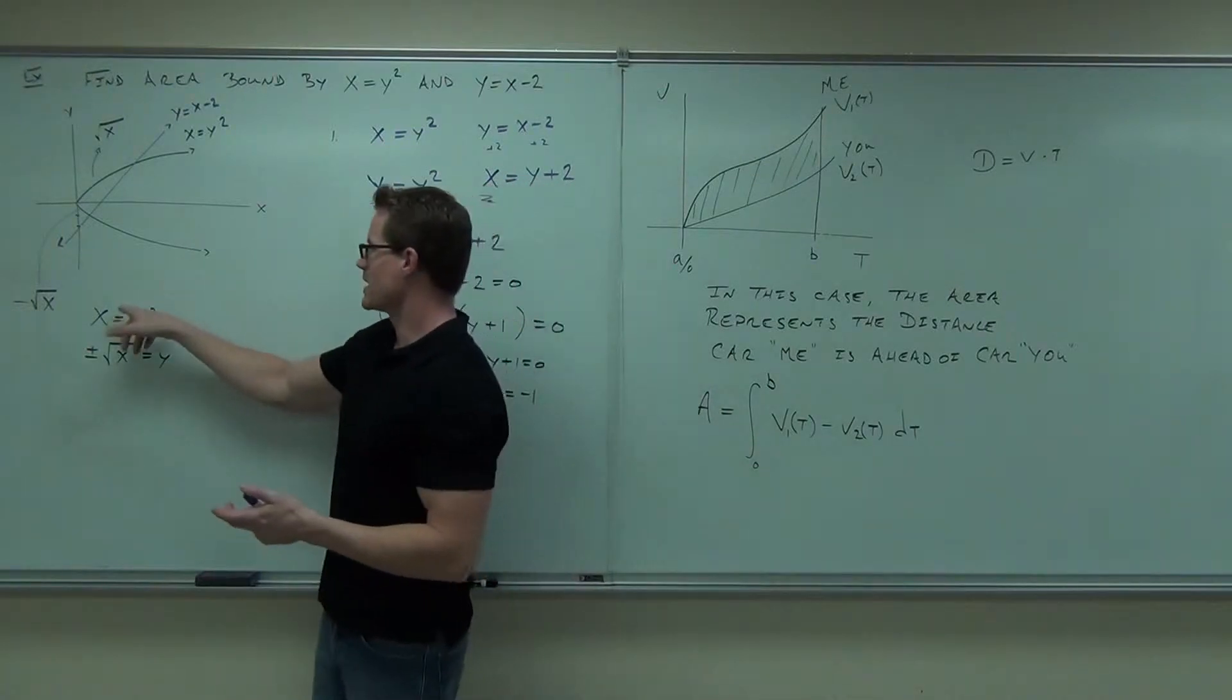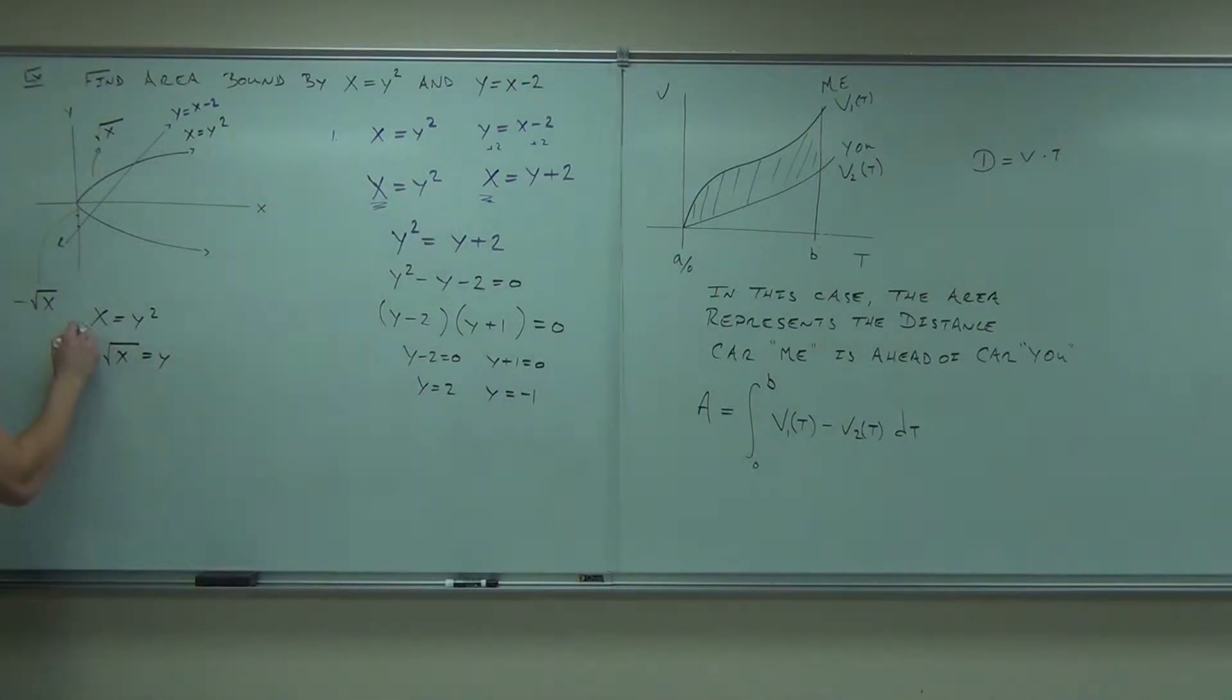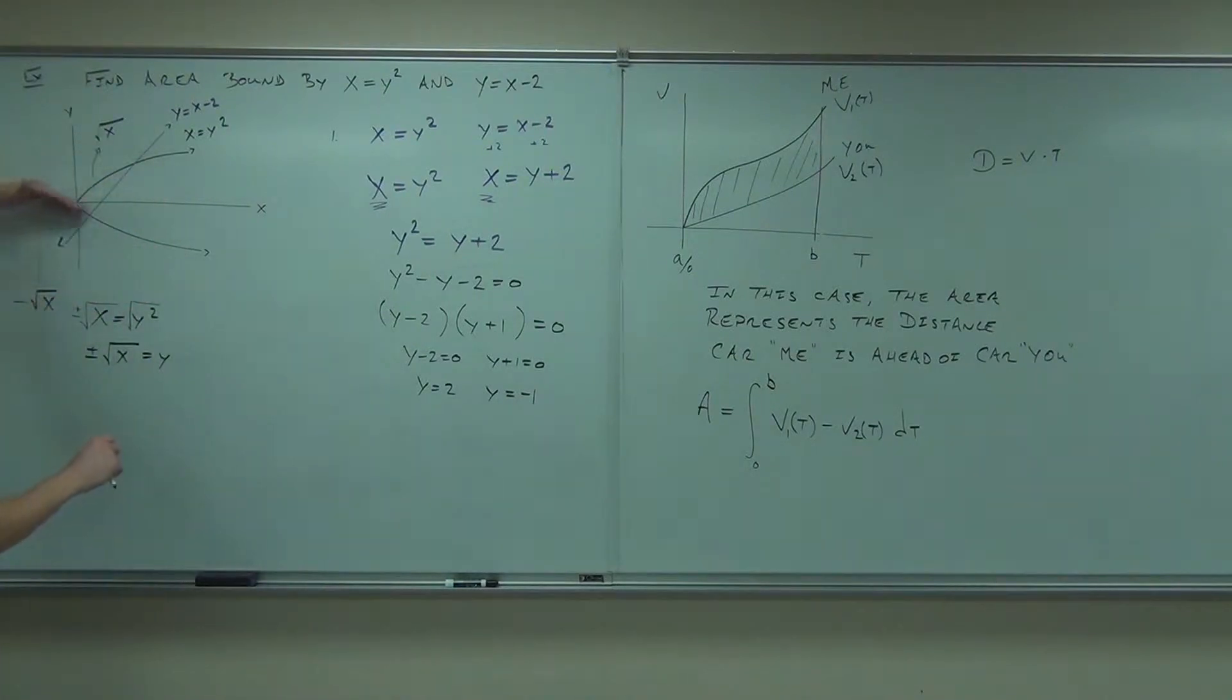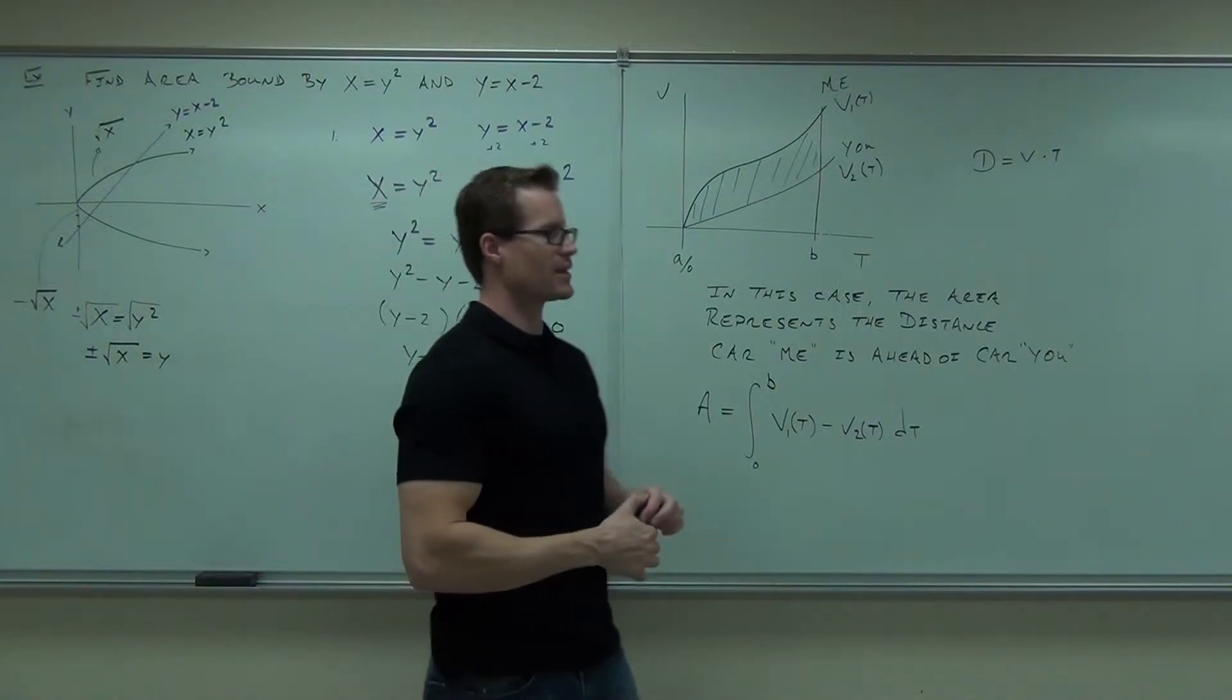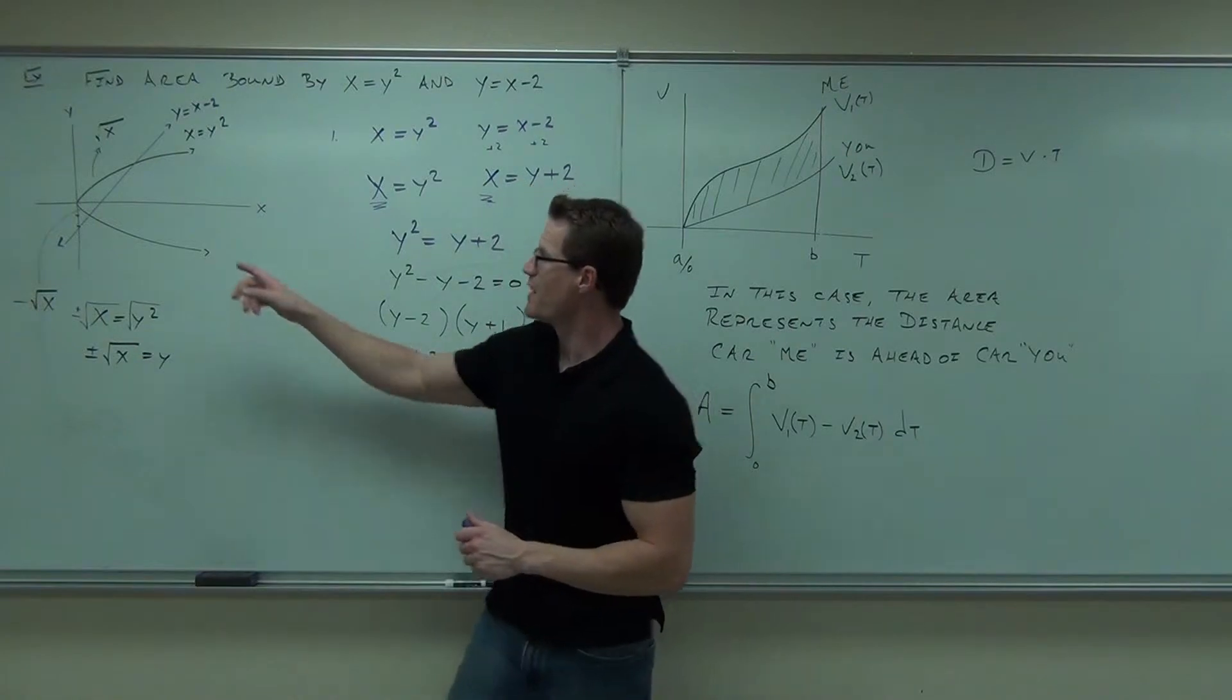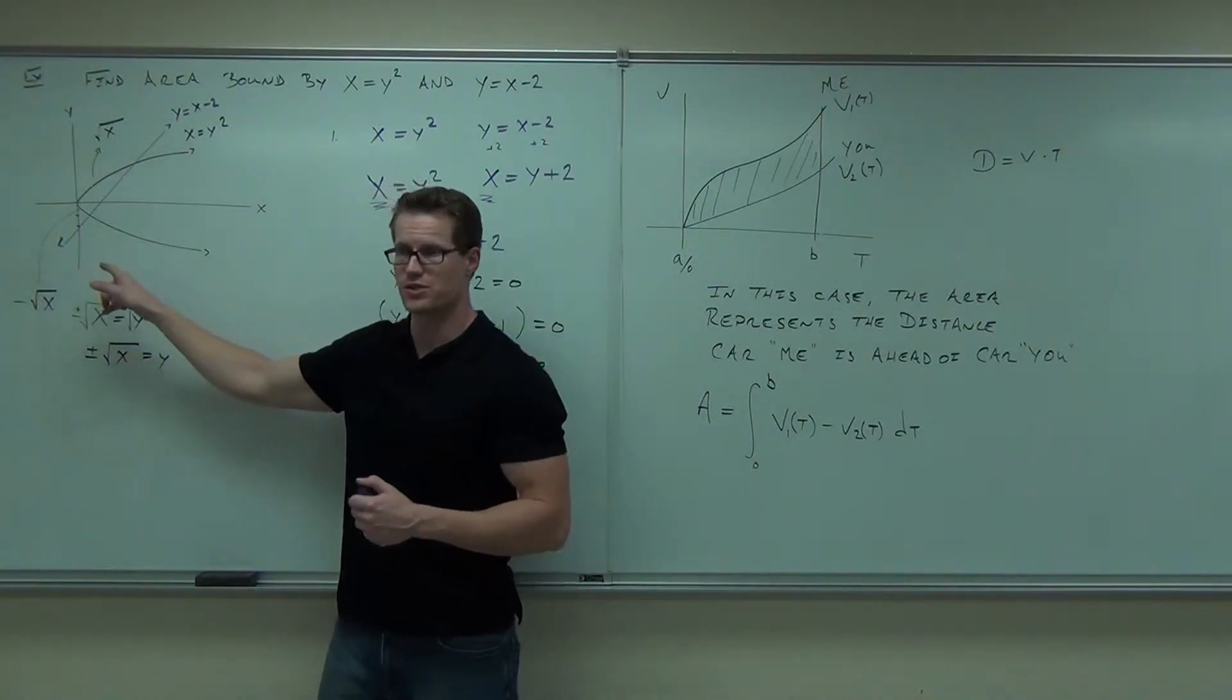So I'm breaking that and saying, hey, x equals y squared. Take a square root every time. It's involved with plus and minus, and you get plus or minus the square root of x. Plus the square root of x, minus the square root of x. So those are two separate functions. Square root of x and negative square root of x. Those are two functions in terms of x, and then a third one, y equals x minus 2.